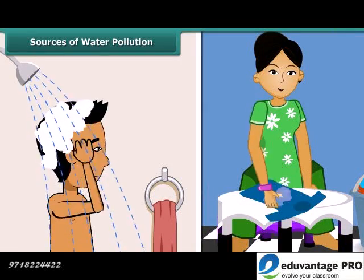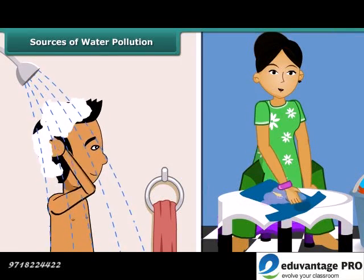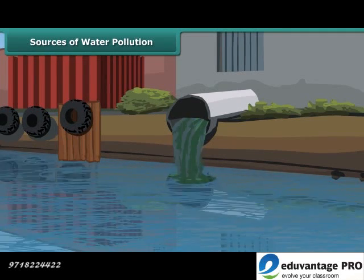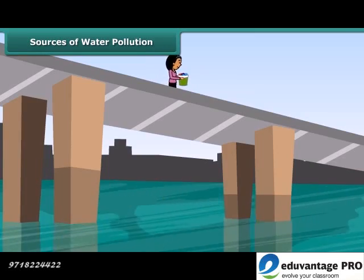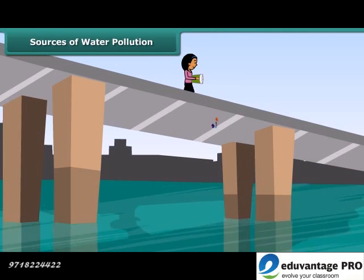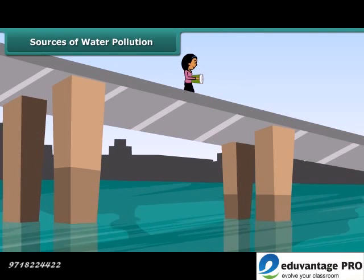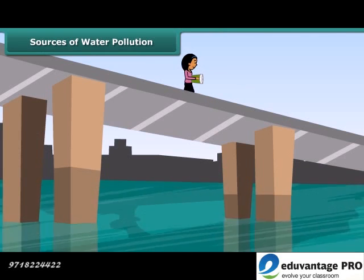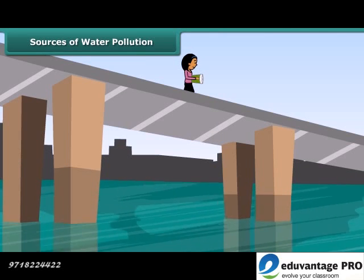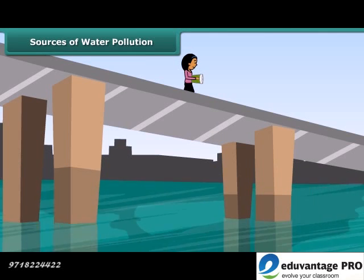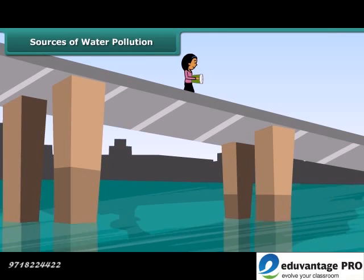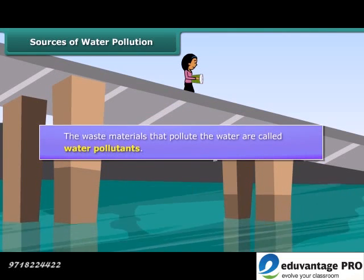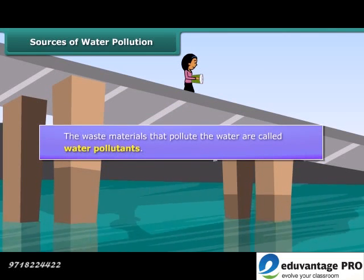Also, people bathe, wash clothes and defecate in rivers and ponds. They also throw garbage, flowers and non-biodegradable polythene bags into the river. Many rivers have become dead due to a high level of pollution, and aquatic life cannot survive in them. The waste materials that pollute the water are called water pollutants.